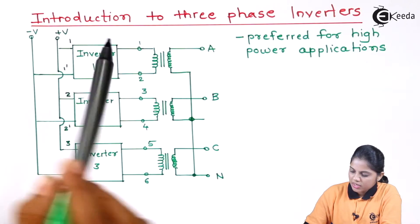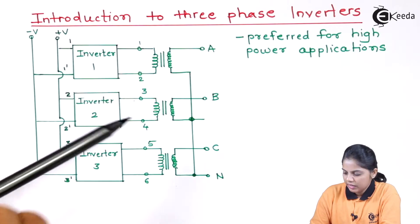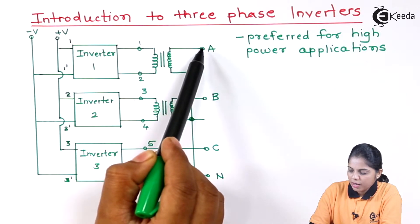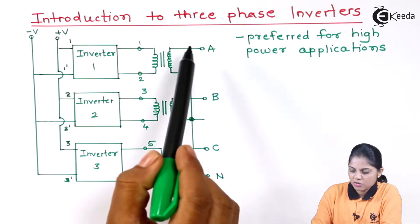At the output side, you can see I have given the name 1, 2 for inverter 1, 3, 4, 5, 6. Now here this is connected to different types of load. You will understand this is what is A, B, and C.